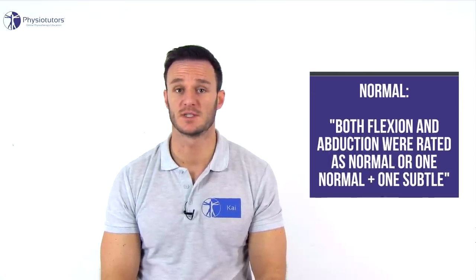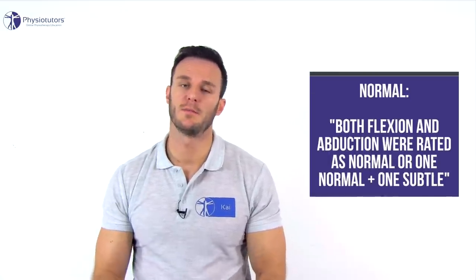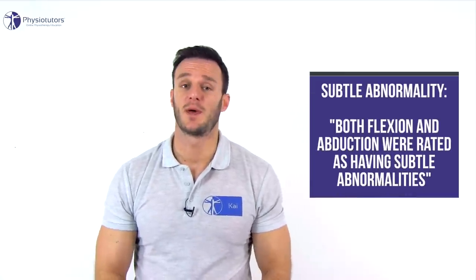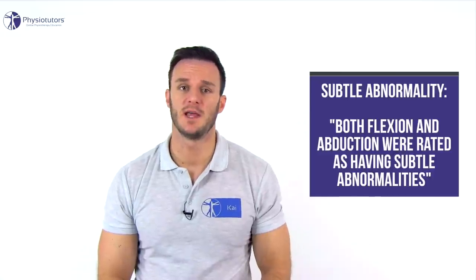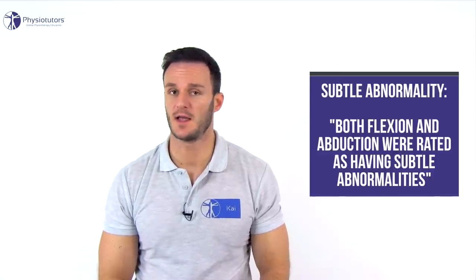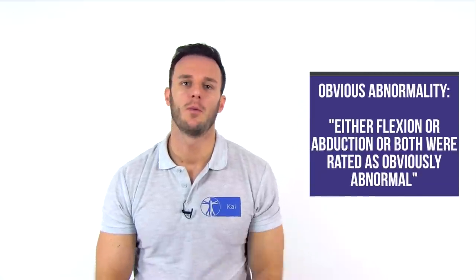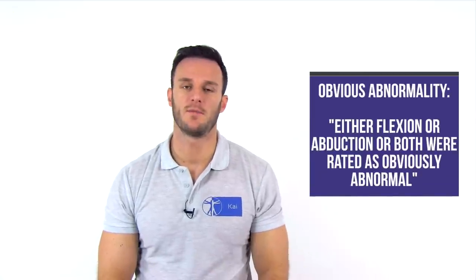Finally, they rated the combination of flexion and abduction test movements together. Normal was defined as both test motions rated as normal, or one motion rated as normal and the other as having subtle abnormality. Subtle abnormality meant both flexion and abduction were rated as having subtle abnormalities, and obvious meant that either flexion or abduction or both were rated as obviously abnormal.